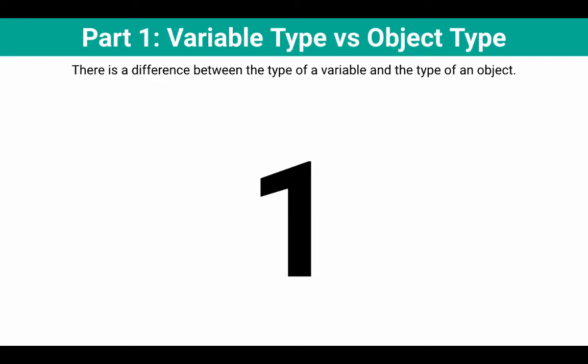Okay, this is part one, variable type versus object type. So our key learning goal here is that there is a difference between the type of a variable and the type of an object.